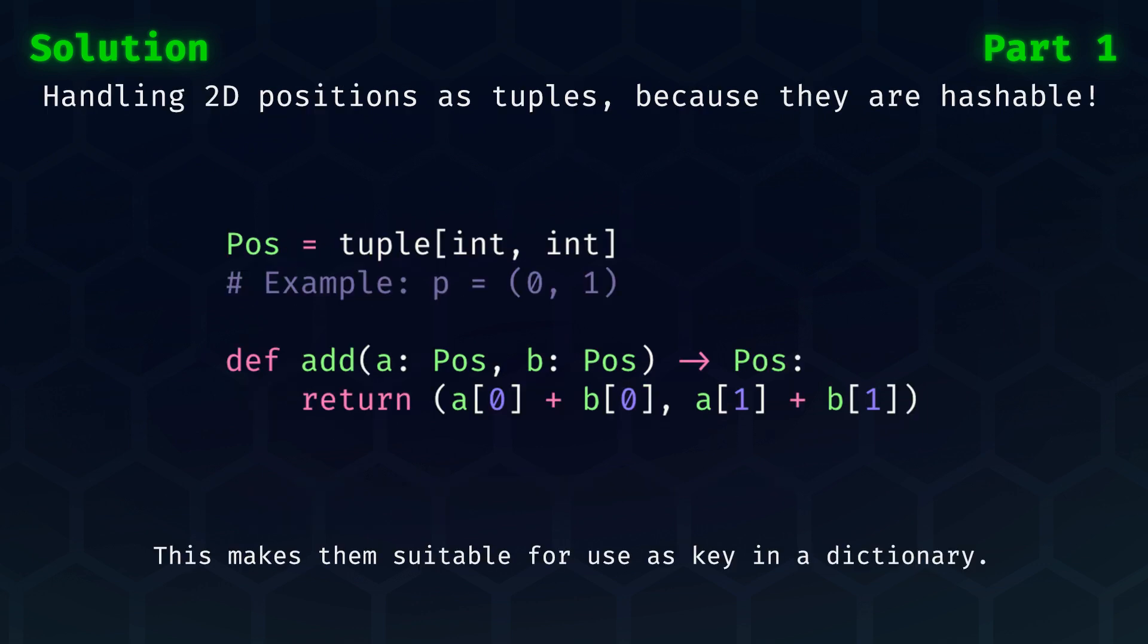Now, to make today's problem a bit simpler to read, let's handle 2D positions as tuples. These are hashable, so we can then use them as a key in a dictionary. Here is an example of how this can be done with typing in Python.